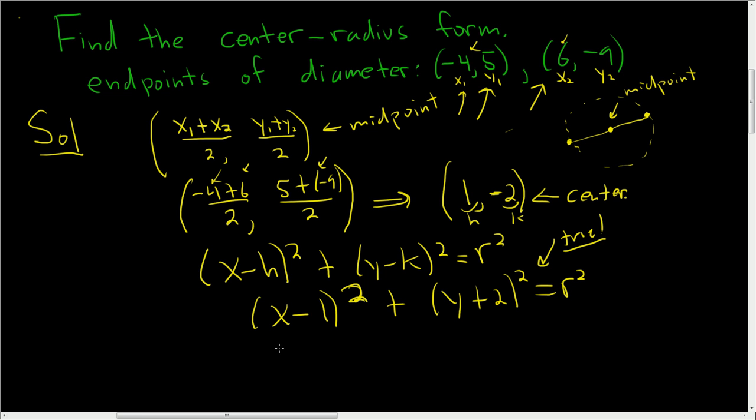So it will be (-4-1)² - that's our x, -4 - plus (5+2)² equals r². So -4 minus 1 is -5. You square that, you get 25, plus here, 5 plus 2 is 7. You square that, you get 49, and that's equal to r².